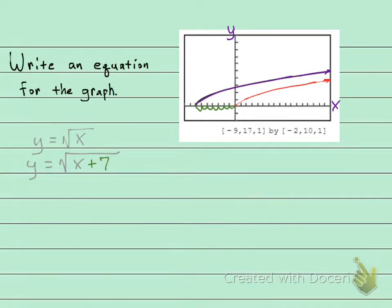Write an equation for the graph. That to me looks like y, or we could call it f of x, equals the square root of x plus 7. That's the perfect answer to that.